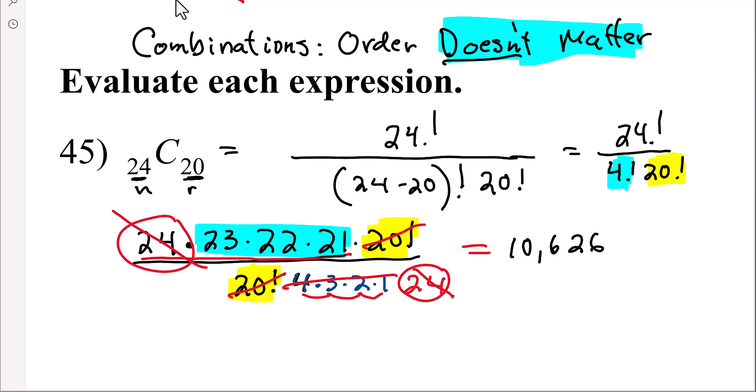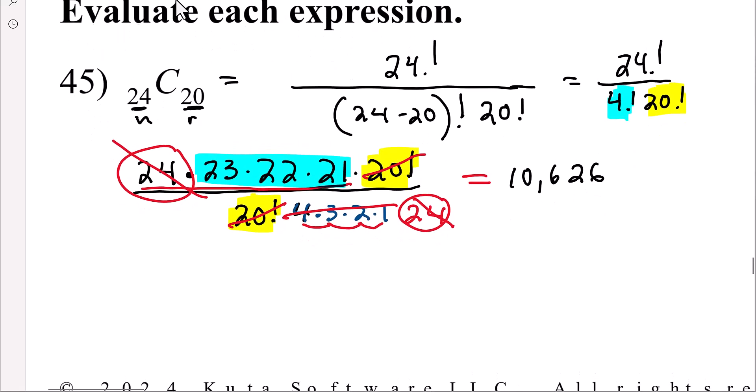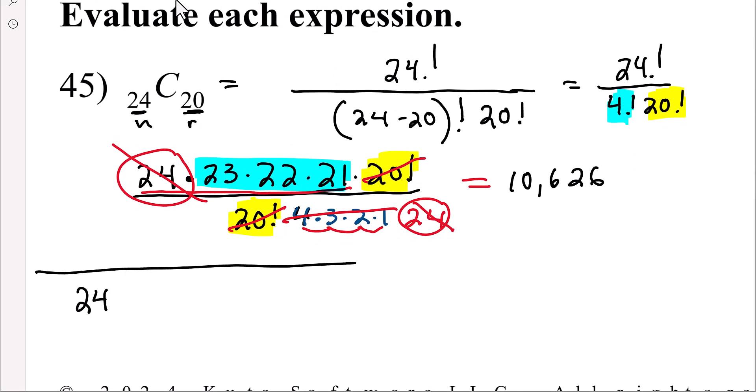Now when you type this in your calculator, these are the calculator strokes. You hit the PRB button, you arrow over to the combination. So the combination option says nCr. You hit enter, and then type 20, and then enter. You might have to enter twice, and then that should get you that result.